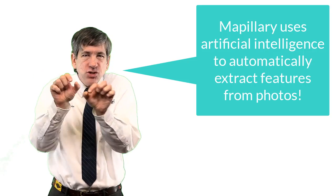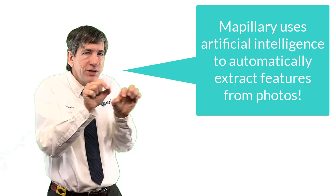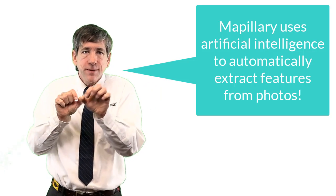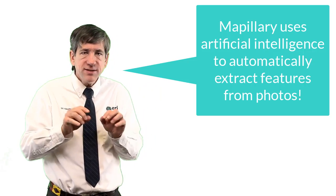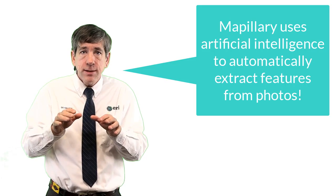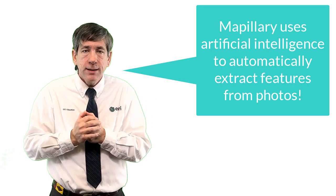As part of the growing set of artificial intelligence tools, Mapillary can also automatically extract map features from images — light poles, trees, benches, curbs, and so on.